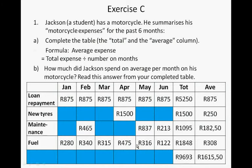Fuel differs from month to month. It amounts to 1,848 and the average is 308 Rand. In total, he spent over the last six months 9,693 Rand, and the average is 1,615 Rand 50 cents per month. These are answers A and B for Exercise C, number one.